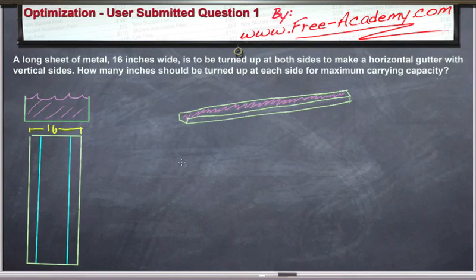In this lecture, presented by www.free-academy.com, we have an optimization question submitted by one of our users. This is an interesting question. We've been given a piece of metal that's 16 inches wide in an unspecified length, and we need to bend up two sides to create a horizontal gutter that can carry the most amount of water.